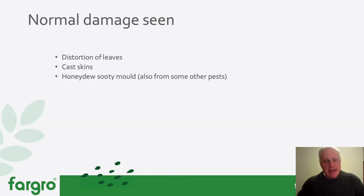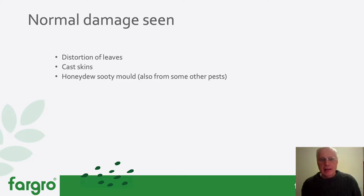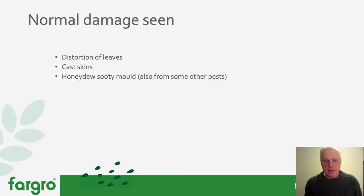Looking at aphids over the crop, we'll probably see some distortion of the leaf. We might see cast skins on the leaves beneath where they're actively working, and potentially if there's a high infestation, honeydew — and if it's been there for a while, sooty mould growing on the honeydew. This is the sugar secreted by a range of sucking insects.